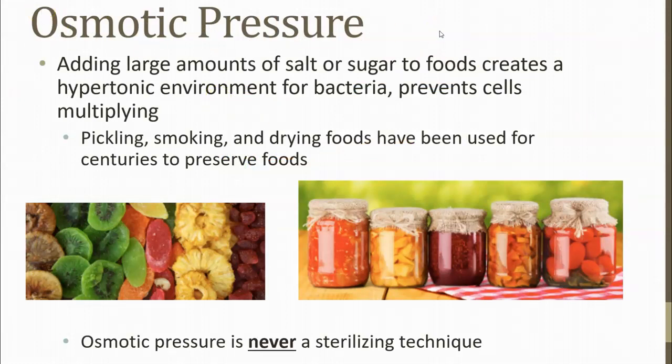Osmotic pressure: we add sugar or salt to create a hypertonic environment, which keeps cells from being able to multiply. The cells lose water because it leaves them and moves into the hypertonic environment. This is not a sterilization technique — it is a control measure — but it will keep your food stuff in good condition for a very long time.